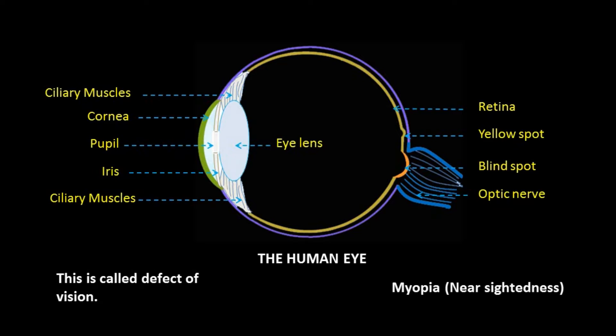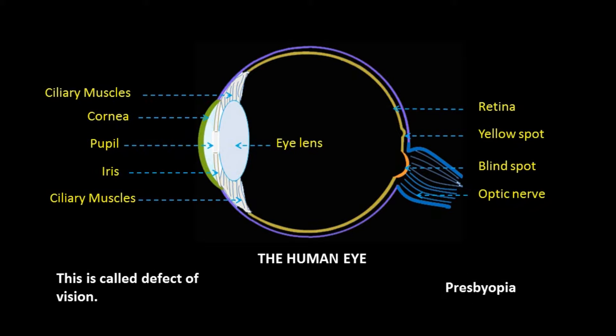The defects are: myopia, hypermetropia, and presbyopia. These are the different defects found in the human eye when ciliary muscles do not work properly. First, myopia — nearsightedness. In this defect, the person can see nearby objects clearly but is unable to see distant objects clearly.